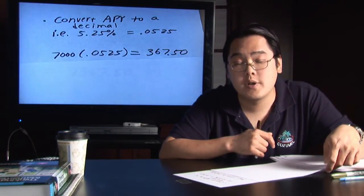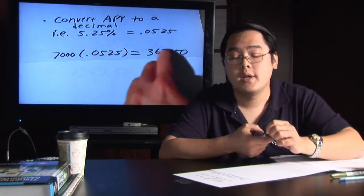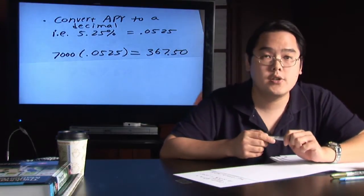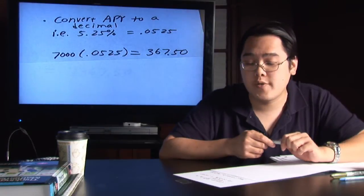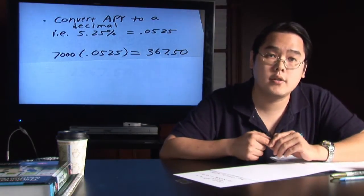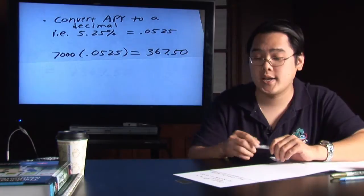It's a very simple, straightforward multiplication problem in that you're taking the $7,000 and you're multiplying it by .0525, and a calculator, a nice simple scientific calculator is going to be pretty handy.